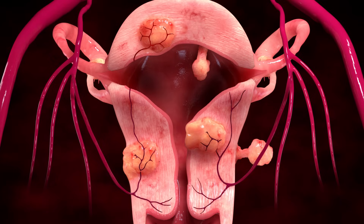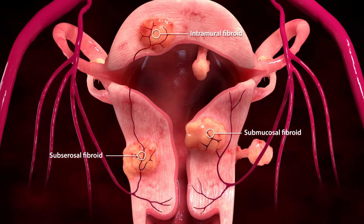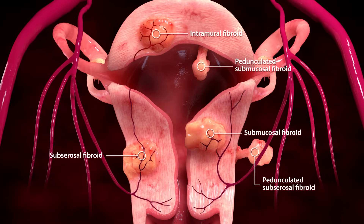Uterine fibroids are non-cancerous growths that develop from normal uterine muscle cells. There are four types of fibroids that develop in or just outside of the uterus. Submucosal fibroids grow into the uterine cavity. Intramural fibroids grow within the wall of the uterus. Subserosal fibroids develop on the outside of the uterus. Pedunculated uterine fibroids occur when a fibroid tumor grows on a stalk, resulting in pedunculated submucosal or subserosal fibroids.